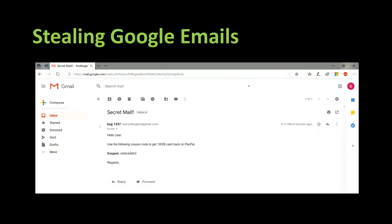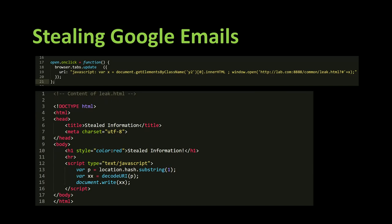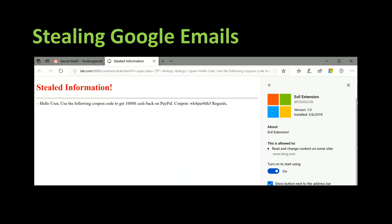Since we have a host access permission bypass on Edge, we can steal Google emails, Facebook data, or anything like that. To demonstrate this attack, suppose we have a Google email saying 'I am a secret email, I have a coupon code for $1,000 cashback.' Using browser.tabs.update pointing to a JavaScript URI, it fetches the particular email with a specific ID, opens a new tab, and sends the content to leak.html, which copies the value from location.hash and writes it onto the page. This is how I was able to steal Google emails.